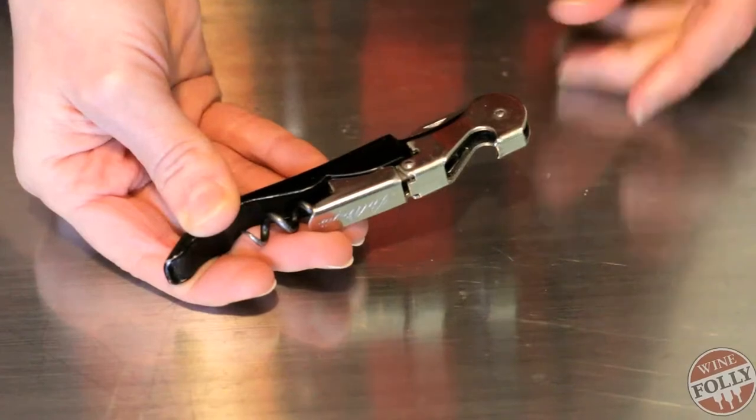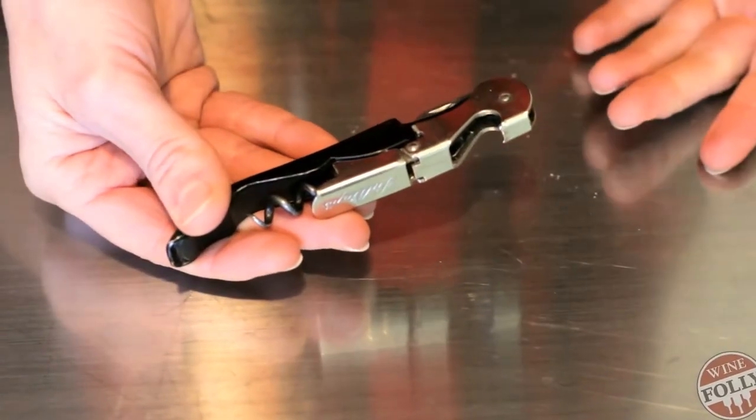I'm going to show you my favorite way to open a bottle of wine. I like to use a corkscrew called a waiter's friend. This one is a pole taps brand.